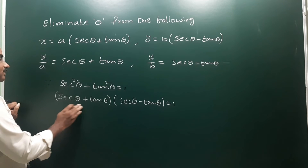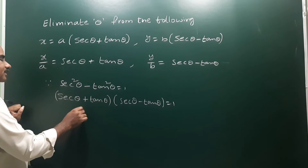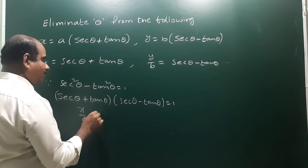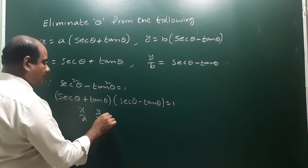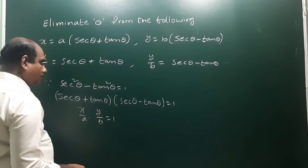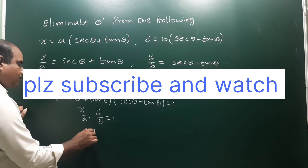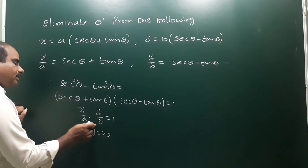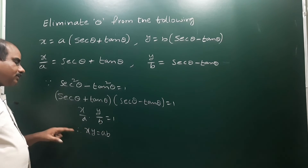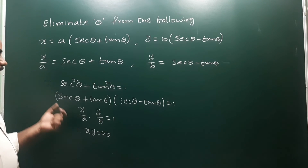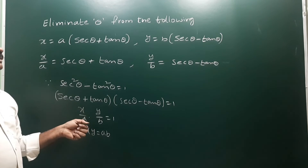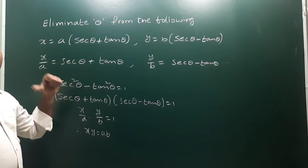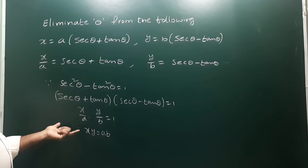Now substitute the values: secant theta plus tan theta is x by a, and secant theta minus tan theta is y by b, and that equals 1. Therefore, finally we get x into y is equal to a into b. This is the final answer after eliminating theta.